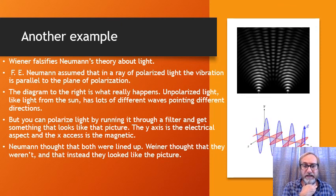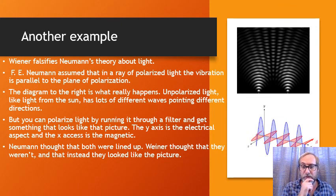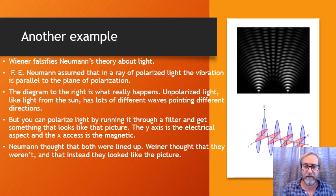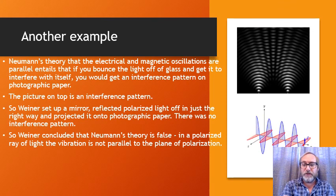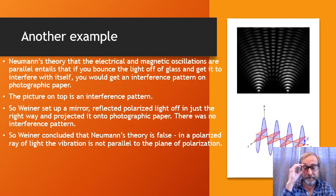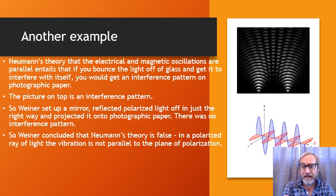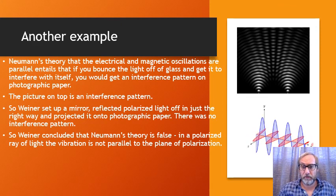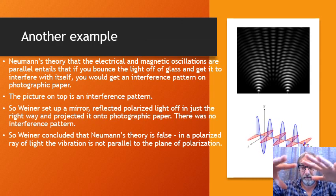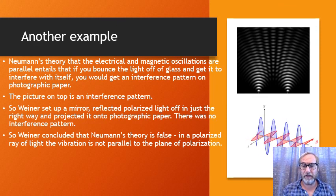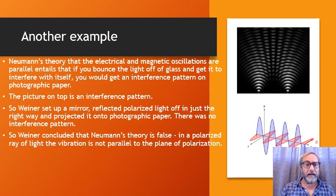Neumann thought the two components would be lined up, and Wiener wanted to challenge that view — to see if he could falsify it. If Neumann was right, you could predict a certain kind of interference pattern when you bounce light off a surface so it interferes with itself, similar to dropping two rocks in a lake. If the vibrations were both in the same direction, you'd see a specific pattern.